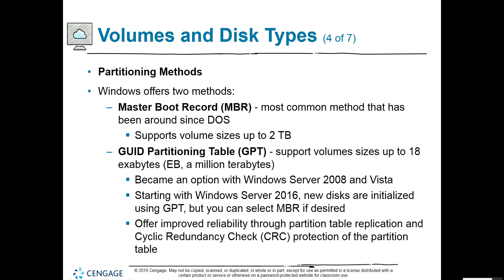Windows offers two partitioning methods. MBR, or master boot record, is the most common method — it's been around since DOS for decades and supports volume sizes up to two terabytes. If you go beyond two terabytes, we have GPT, or GUID Partition Table, which supports volume sizes up to 18 exabytes — that's a million terabytes. GPT became an option in Windows Server 2008 and Vista, and starting with Server 2016, new disks are initialized using GPT by default, though you can select MBR if needed.